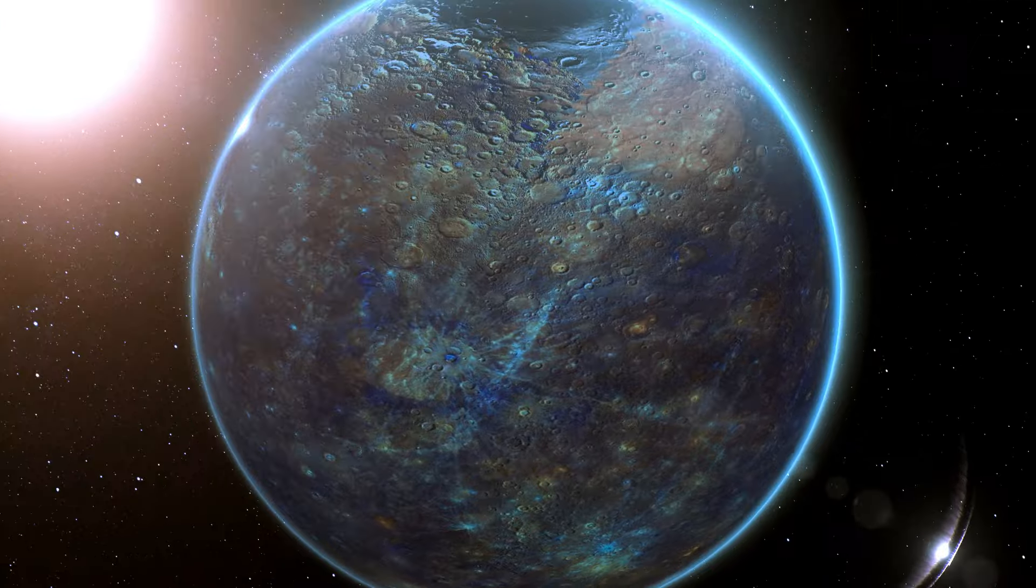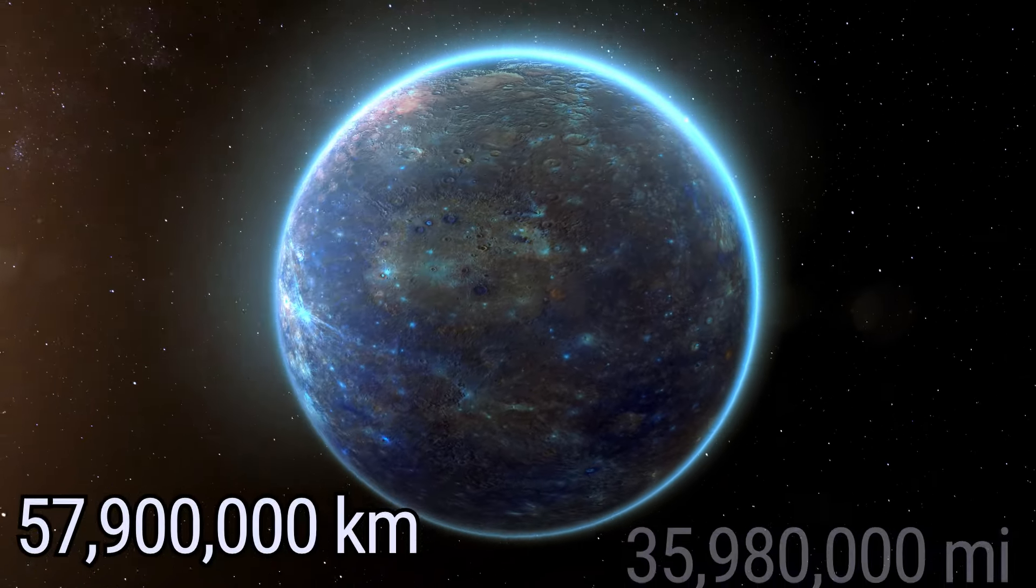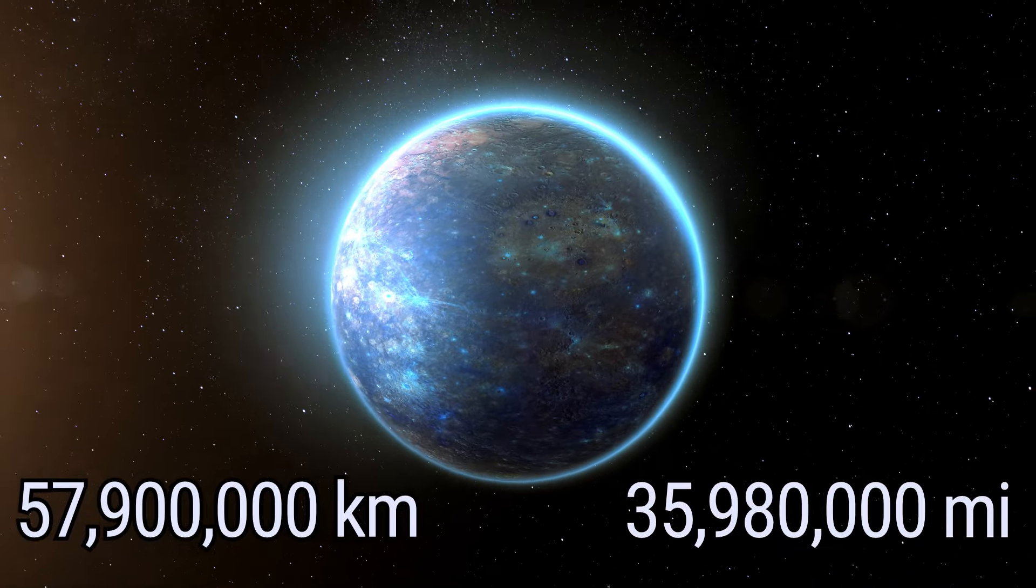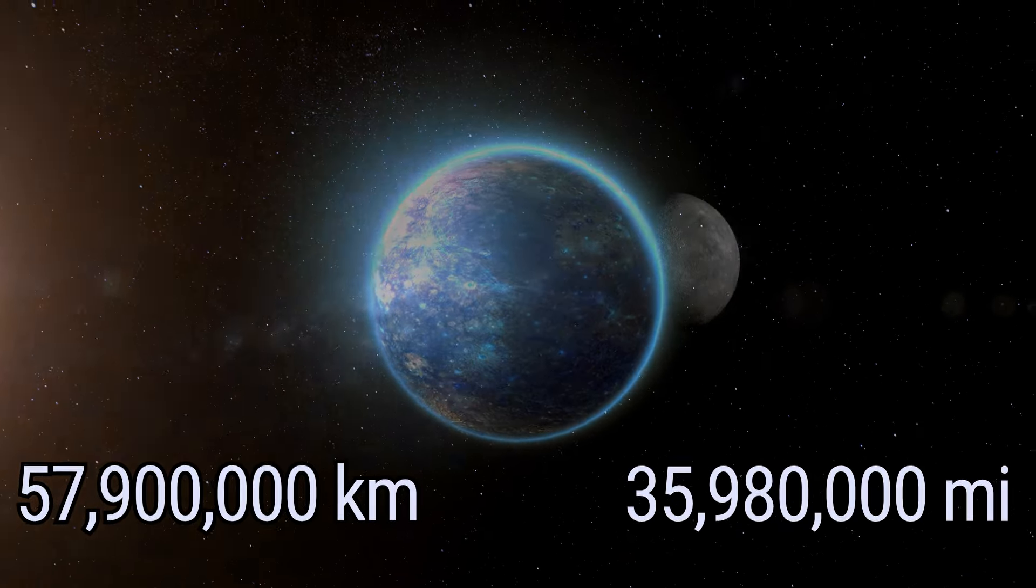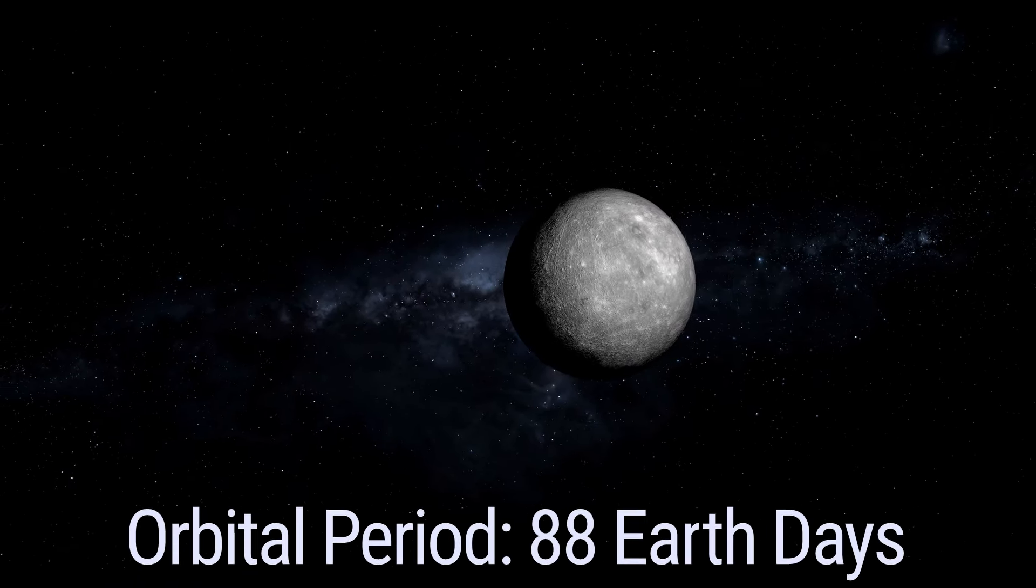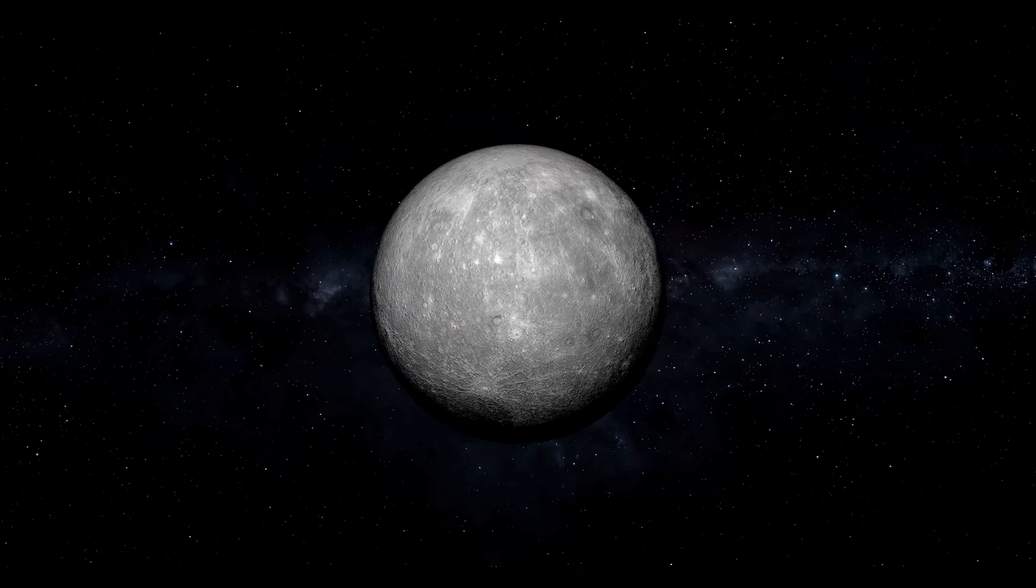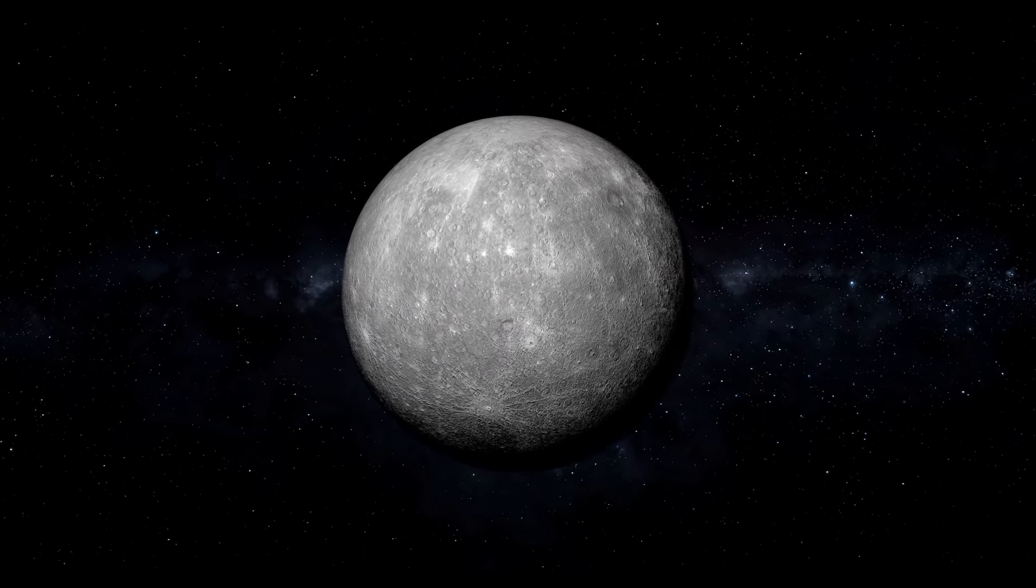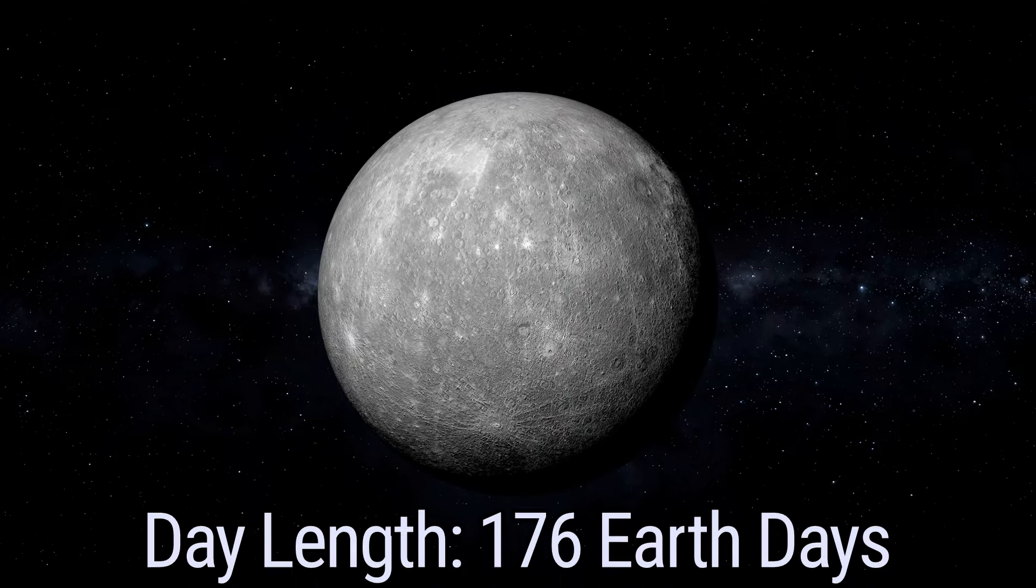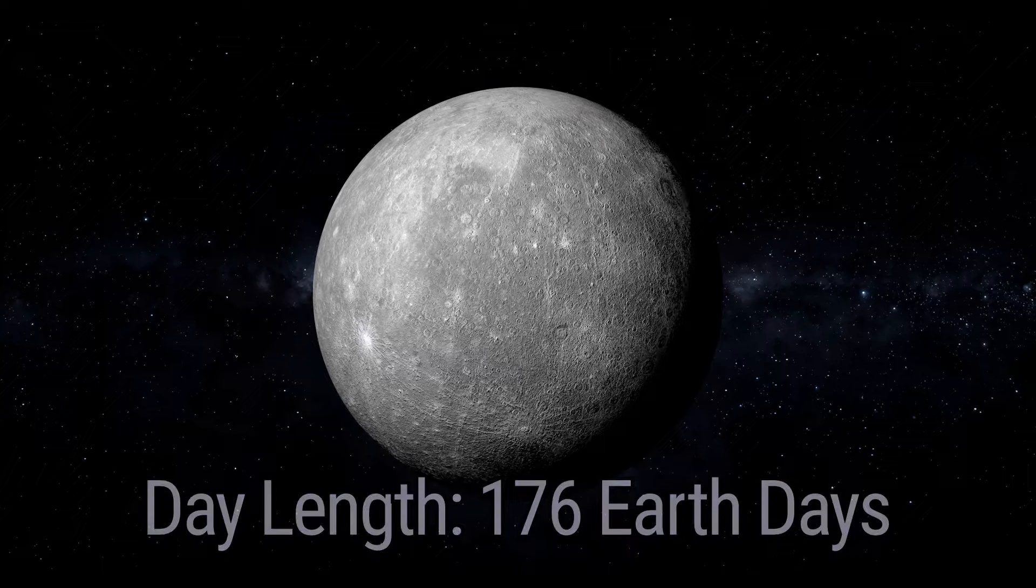On average, Mercury lies a mere 57.9 million kilometers, or 35.98 million miles, from our star. Mercury completes its orbit in just 88 Earth days. Can you imagine a year that short? Despite its swift year, a day on Mercury lasts a whopping 176 Earth days due to its leisurely rotation.